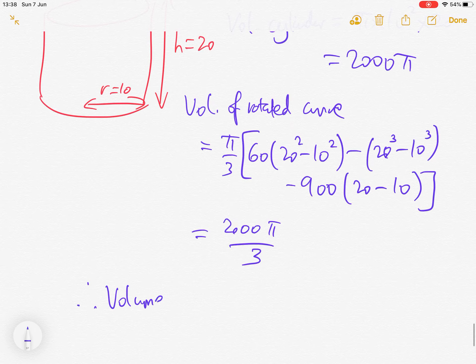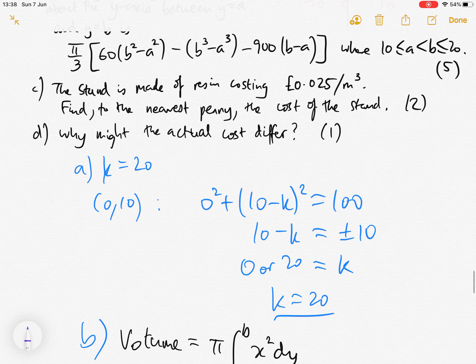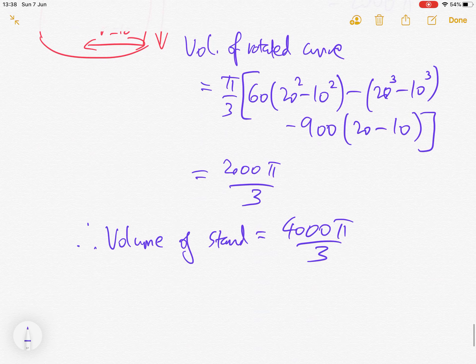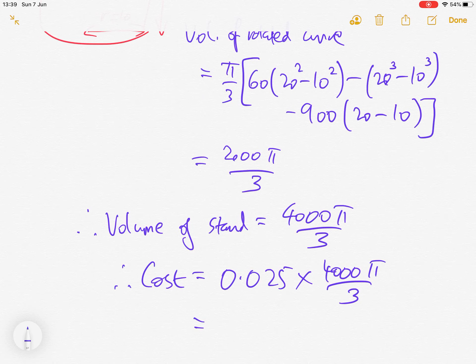Now we subtract to get the stand, because this is the bit that's hollowed out where the curve is. We take this bit away because that's where the bowling ball goes. Therefore, volume of stand is 4000 pi over 3. The cost is 0.025 pounds per meter cubed times this, which is 100 pi over 3, or 104 pounds 72 to the nearest penny.